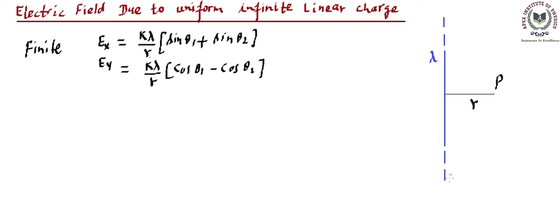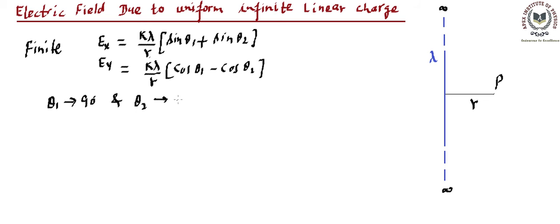Now if we join point P to the endpoint which is going to be at an infinite location, this angle is going to be approximately 90 degrees — so theta 1 will be approaching 90 degrees. Similarly, the other end is also reaching to infinite, so that angle is also going to be approaching 90 degrees. Therefore, theta 1 and theta 2 will both be approaching 90 degrees.